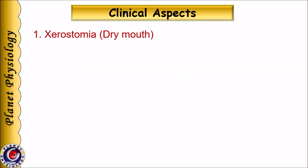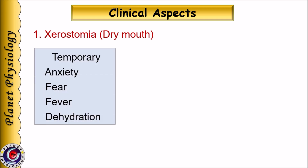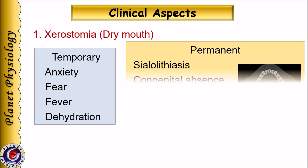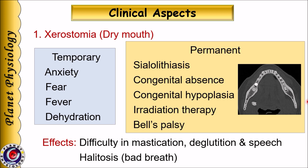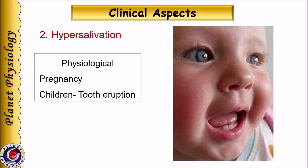Now let us study some clinical aspects associated with salivary secretion. First is xerostomia, or dry mouth, which results from decreased or absence of salivation. It may be temporary due to anxiety, fear, fever, or dehydration. Permanent causes include sialolithiasis — calculi in the salivary gland or duct — congenital absence or hypoplasia of the salivary gland, irradiation therapy, or Bell's palsy. Xerostomia leads to difficulty in mastication, deglutition, and speech, and results in halitosis, that is, bad breath.